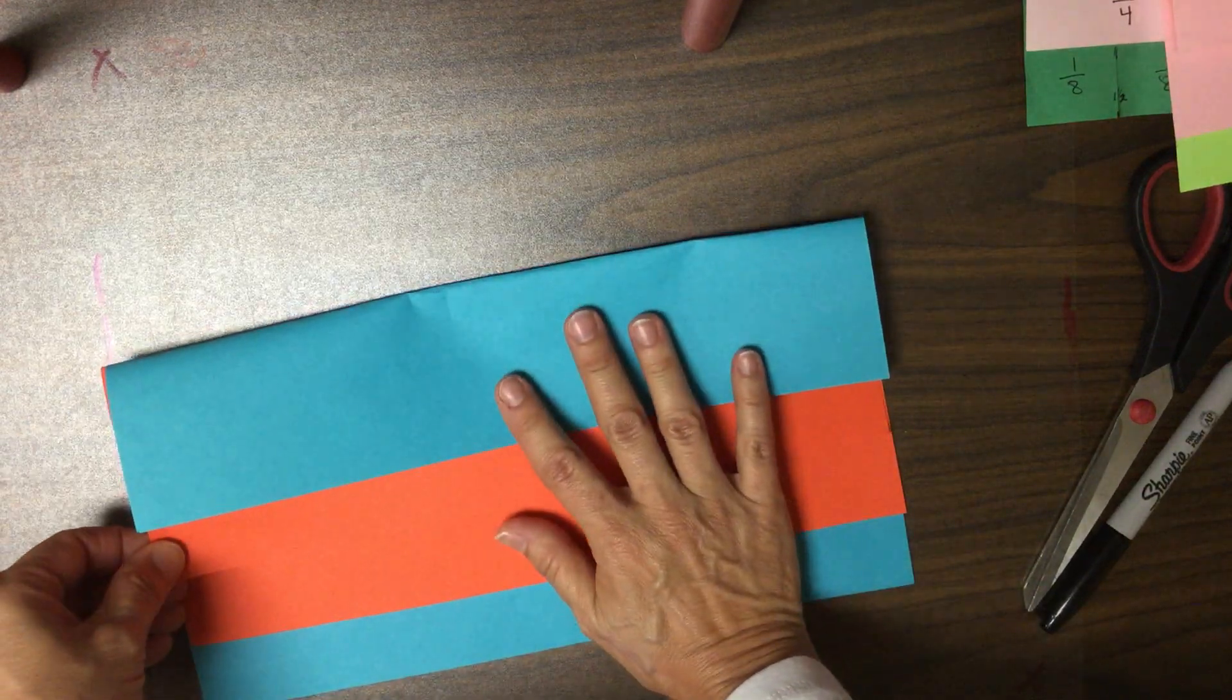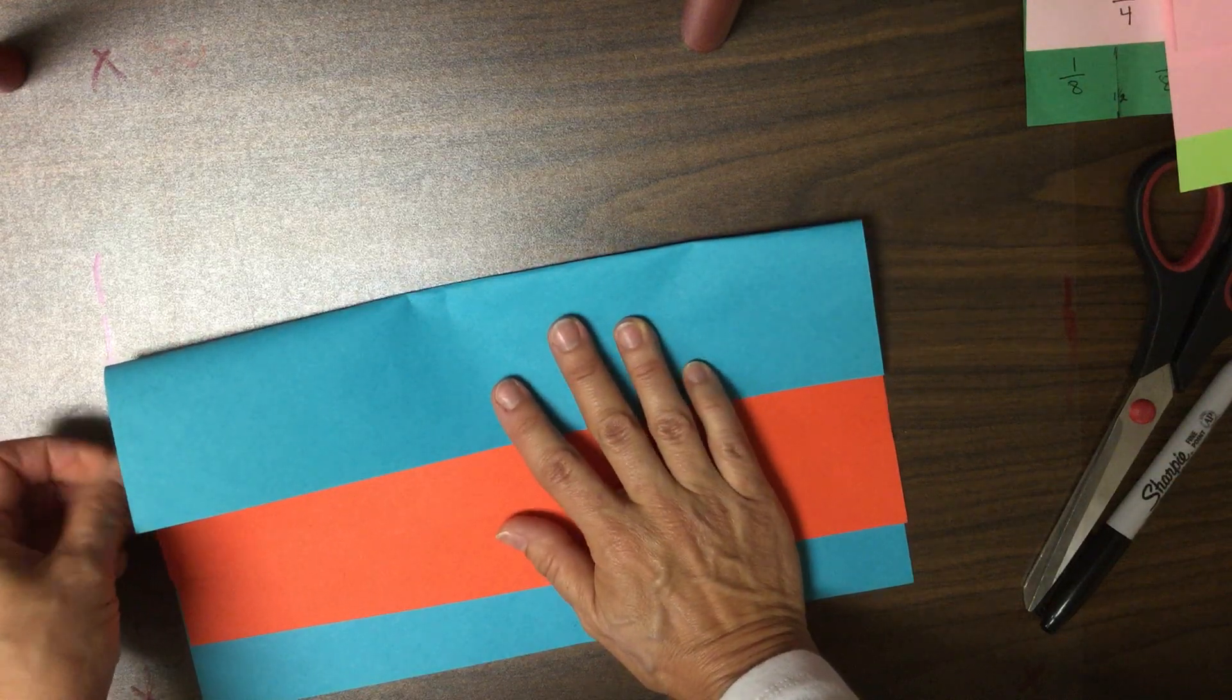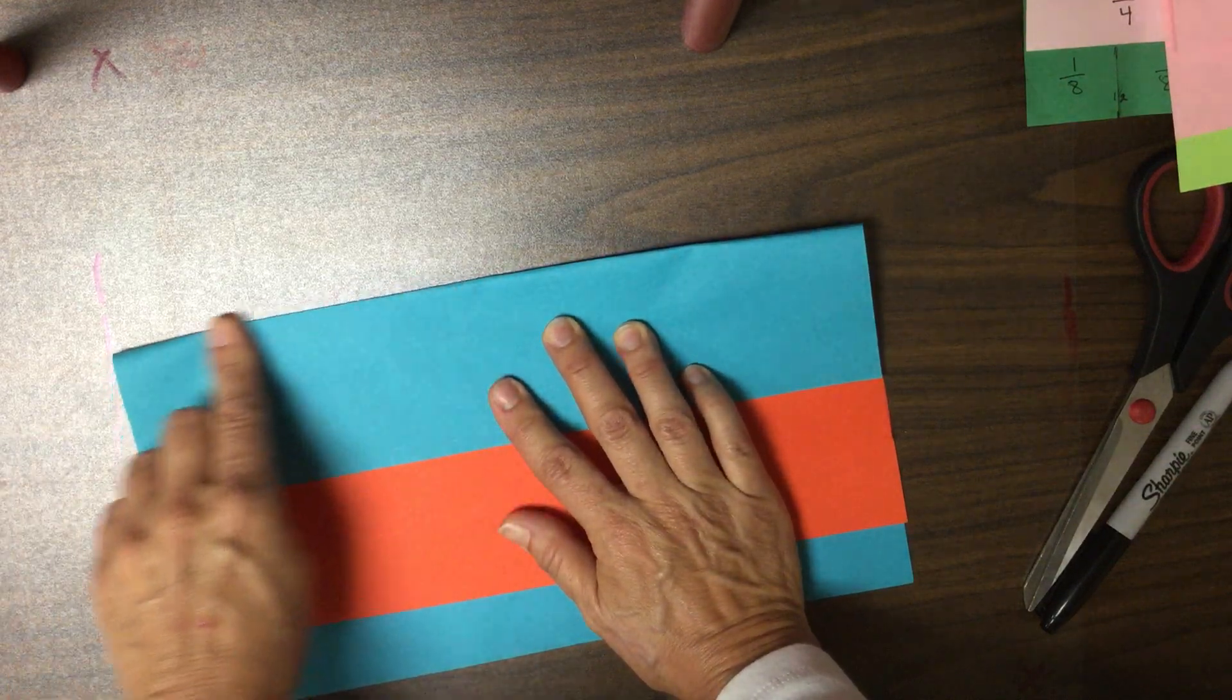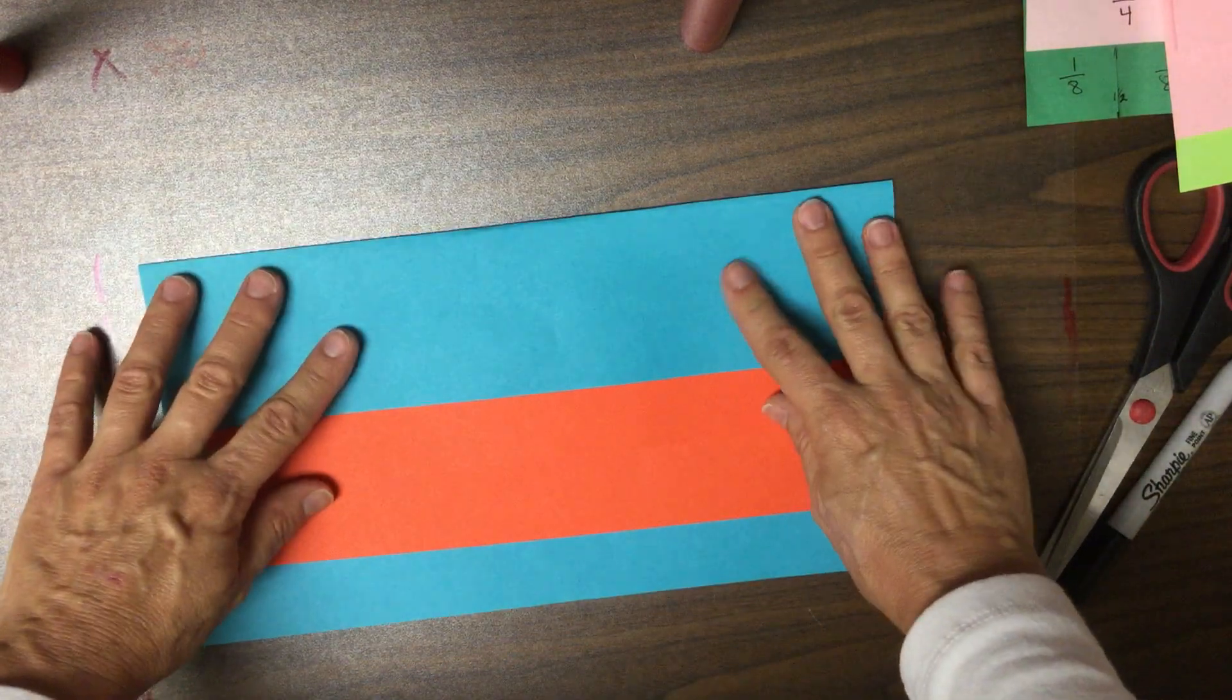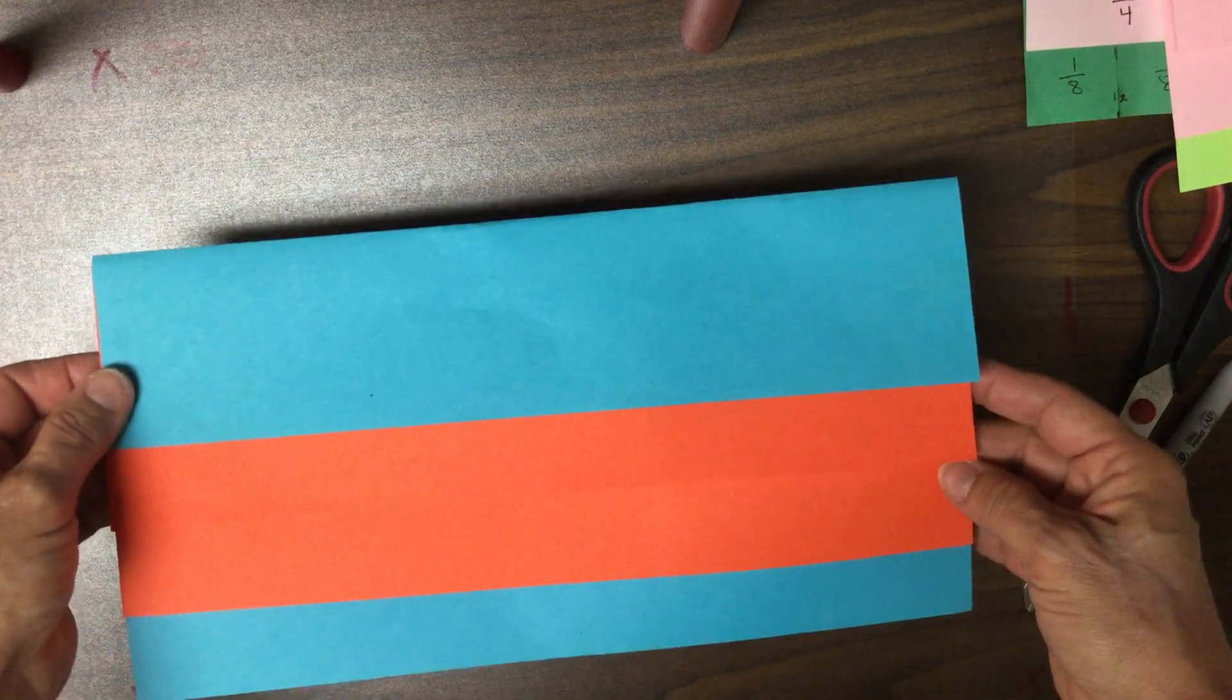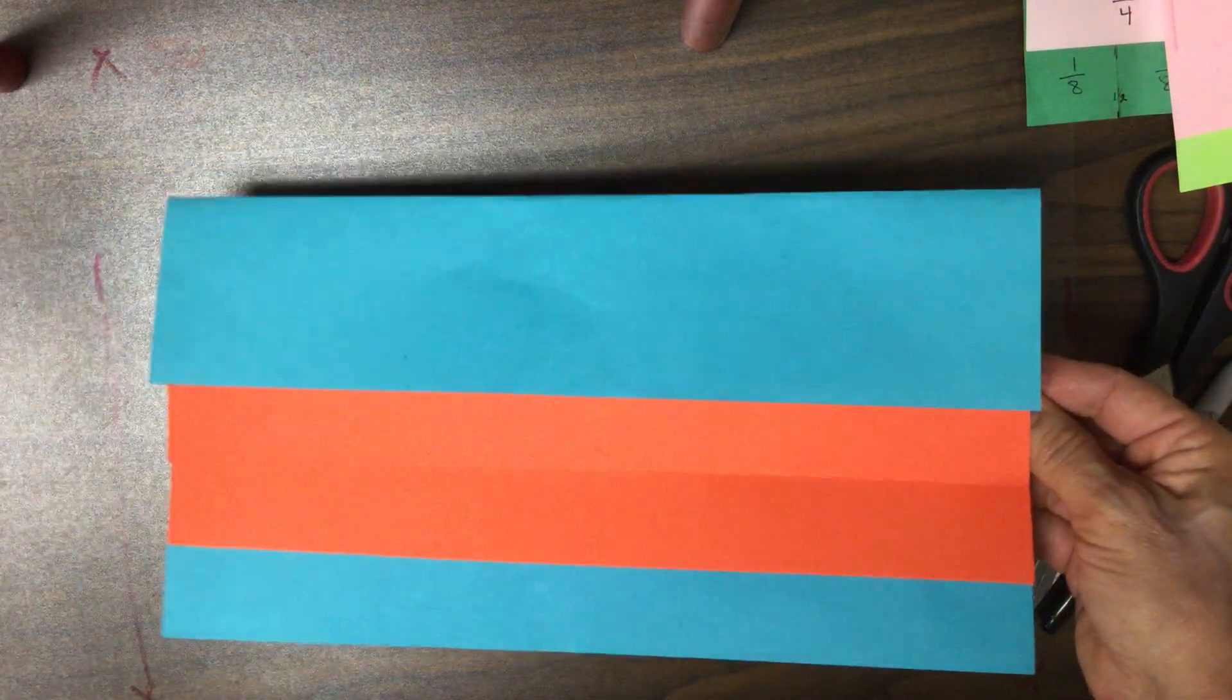Now not all of these papers are exactly the same size so one paper might hang over a tiny bit and that's okay. Alright so that's how you construct the two flip books. In the next video I am going to show you how to label them.